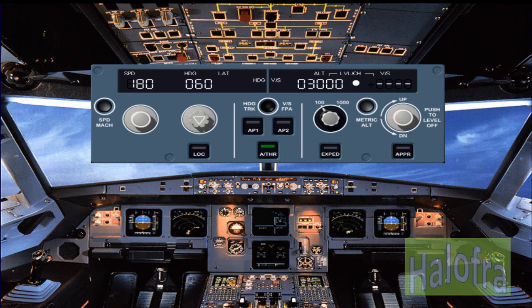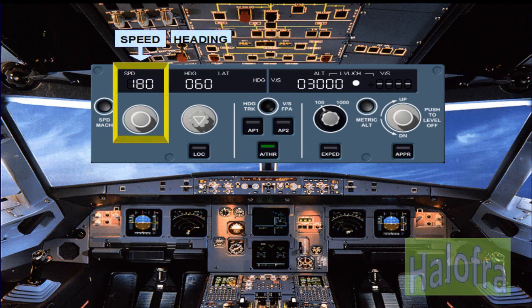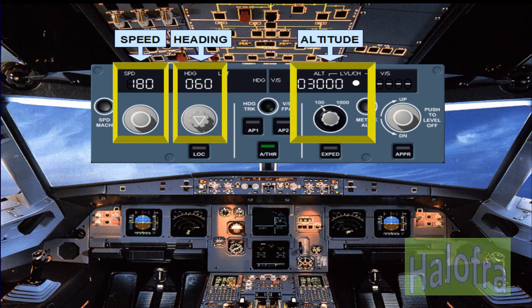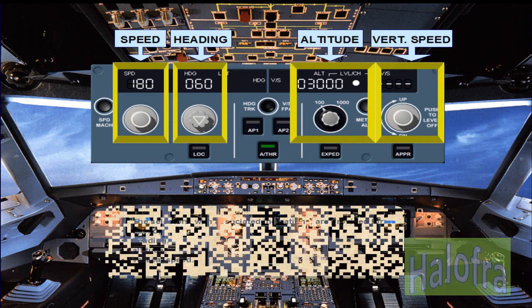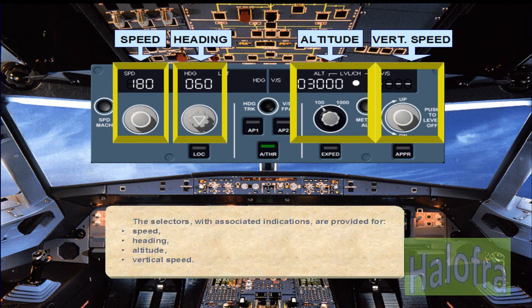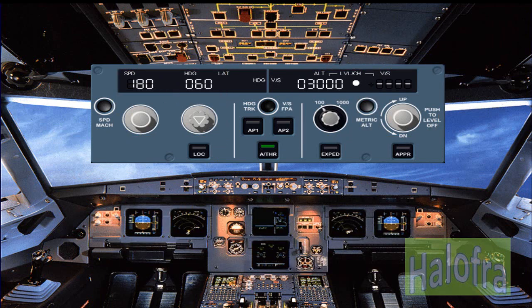The selectors with associated indications are provided for speed, heading, altitude, and vertical speed. The metric altitude push button is also part of the altitude area.